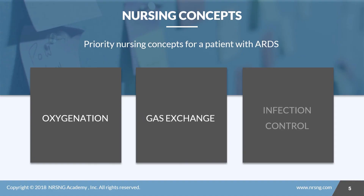When it comes to nursing interventions, our number one priority is to recognize ARDS as it starts to progress and advance the patient to the right level of care as soon as possible. The hope is that the sooner we address the underlying condition, the less likely they are to develop ARDS — or the less severe it will be. We focus on oxygenation and gas exchange, monitor SpO2 and ABGs, watch the PF ratio, and prevent further infections, especially VAP. Check out the care plan attached to this lesson for more specific nursing interventions and rationales.